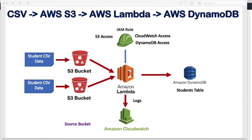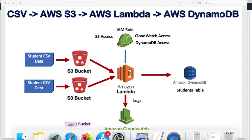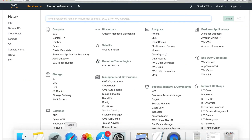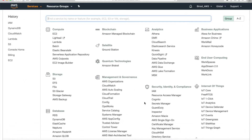In this picture I have shown that I will configure two different S3 buckets. First I will do the simple one, then I will add one more bucket. So let us start and first go to the IAM role.